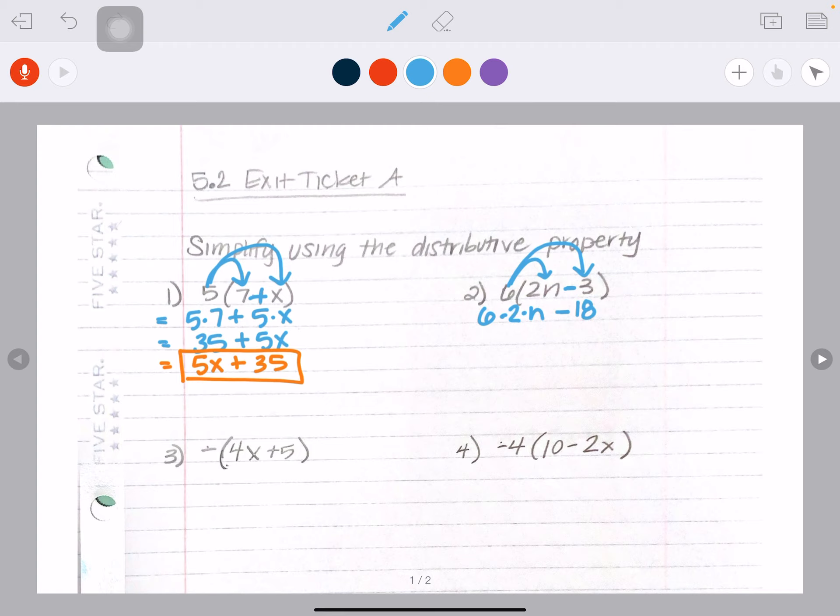Okay, so let's simplify. Six times two is 12. And there's N's. There's 12 N's. Remember, those are shapes minus 18. And that's my final answer.